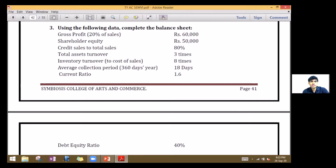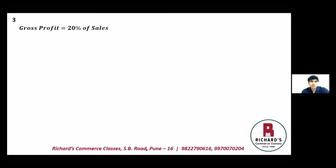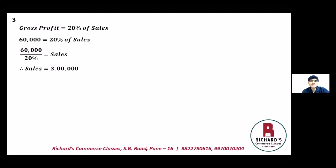Let us start with the data. Gross profit is 20% of sales and equals 60,000. So 60,000 equals 20% of sales. Therefore sales equals 60,000 divided by 20%, which gives us total sales of three lakh rupees.